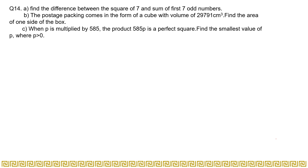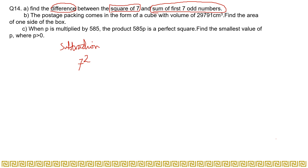Let's begin the exercise. The first question is: find the difference between the square of 7 and the sum of the first 7 odd numbers. What do you mean by difference? By difference you mean subtraction. You have to find the difference between the square of 7 — that is 7 to the power 2, or 7 squared — and the sum of the first 7 odd numbers.